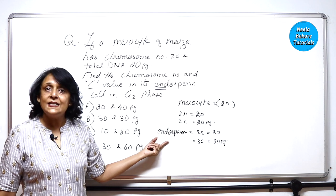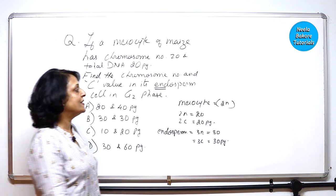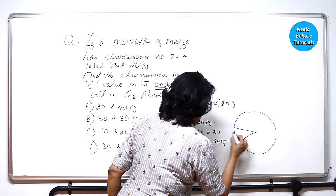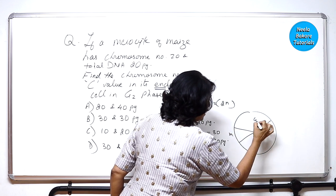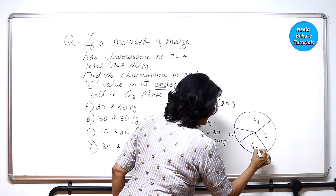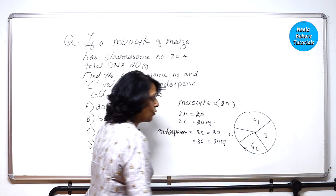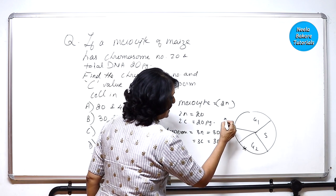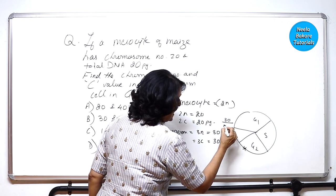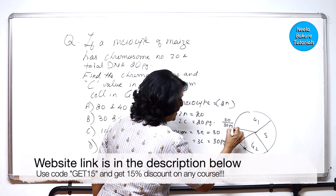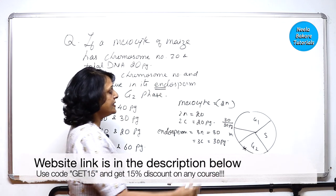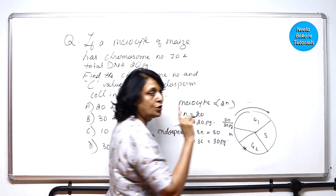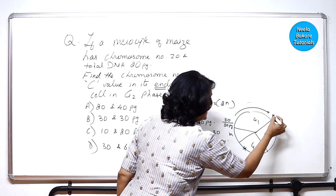If this cell undergoes cell cycle, so what will happen here is this is your M phase, G1, S, and G2. We have to find the chromosome number in G2. So the cell which starts this cell cycle has chromosome number 30 and DNA content 30 picograms. When this cell completes its G1, no change in chromosome and DNA content.